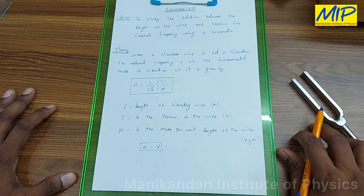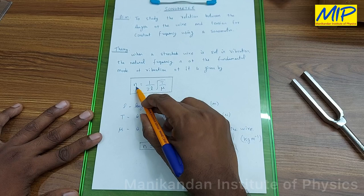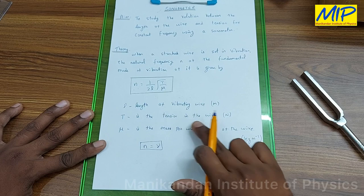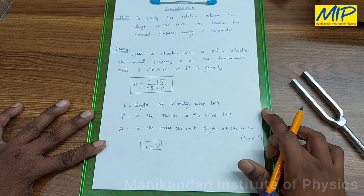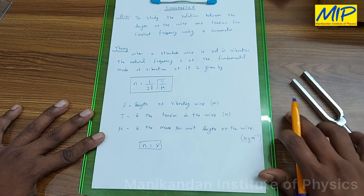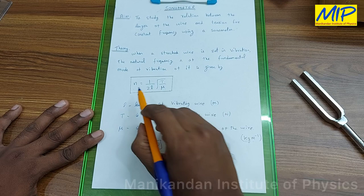When a stretched wire is set in vibration, the natural frequency n of the fundamental mode of vibration is given by n = 1/(2L) × √(T/μ), where L is the length of the vibrating wire in meters, T is the tension in the wire in Newtons, and μ is the linear mass density — that is, mass per unit length of the wire in kilograms per meter.